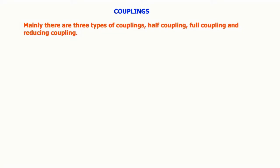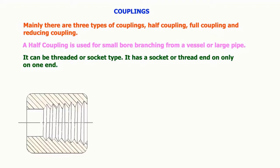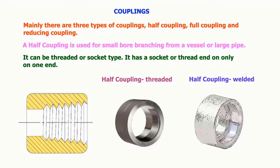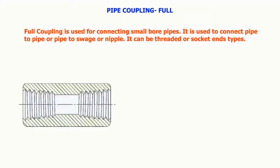Mainly there are three types of couplings: half coupling, full coupling, and reducing coupling. A half coupling is used for small bore branching from a vessel or large pipe. It can be threaded or socket type. Full coupling is used for connecting small bore pipes, to connect pipe to pipe or pipe to swage or nipple. It can be threaded or socket end types.